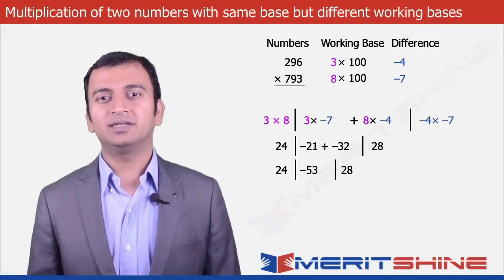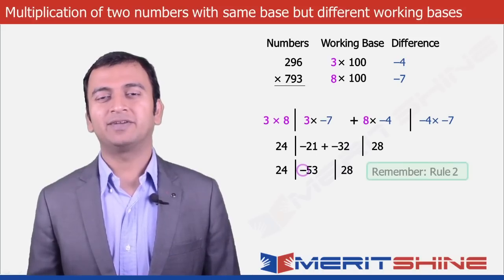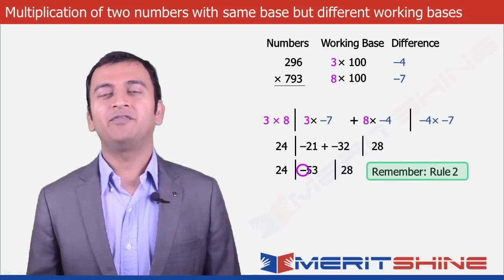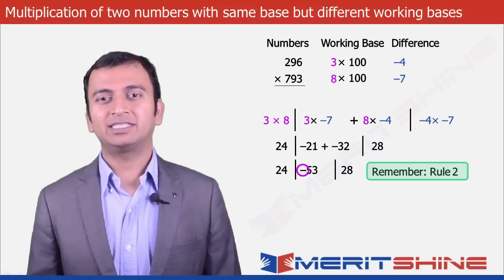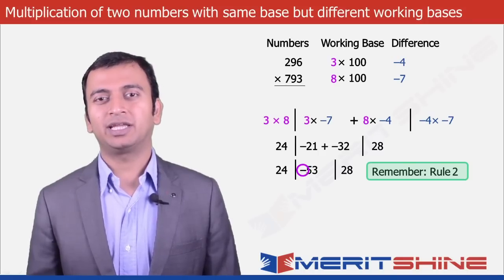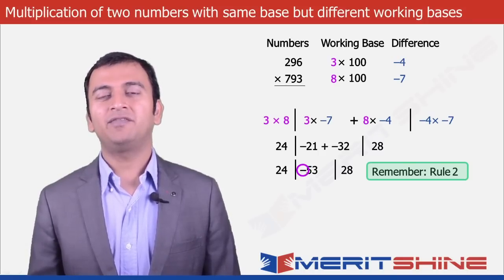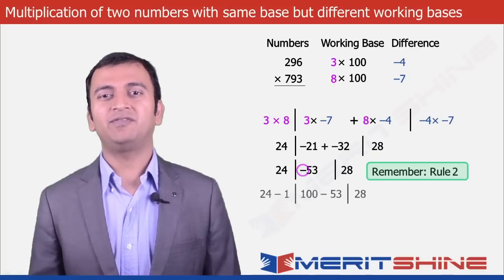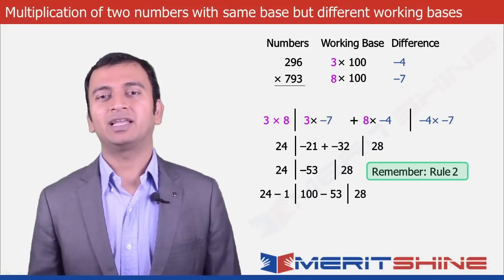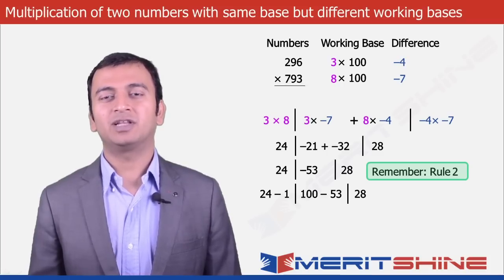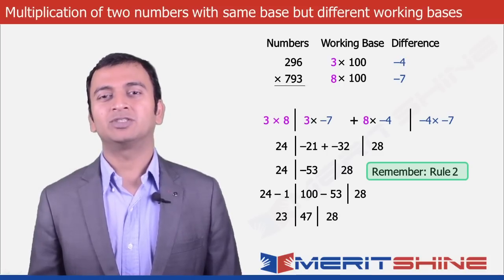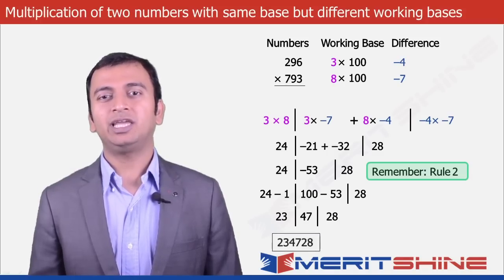We observe that our second part is negative, and as per Rule 2, we cannot have any negative value in part 2 or 3. So to make it positive, we will need to borrow 1 from the first part, making it 24 minus 1, and we get plus 100 minus 53 in part 2, which gives us 47. So now we can write down our final answer as 2, 3, 4, 7, 2, 8 — that is 233472 with 28.